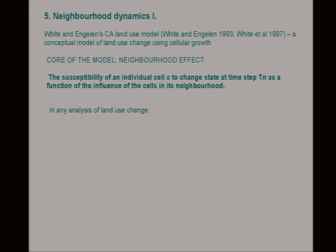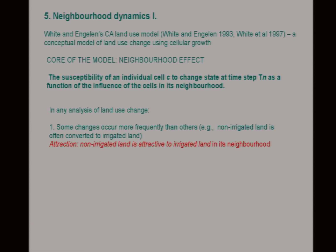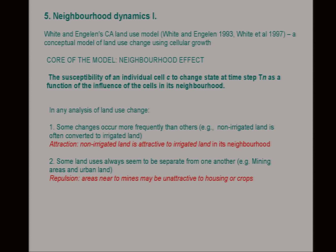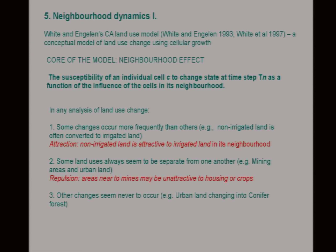So just to talk about the neighbourhood dynamics. At the core of this model by White and Engelen, we have the idea that there's the susceptibility of an individual cell C to change state at time TN as a function of the influence of the cells in its neighbourhood. When you do a land use change analysis, you see some changes that frequently repeat themselves. You don't get irrigated land that just turns up out of nowhere — normally it's farmland that was not under irrigation. That's attraction, represented in our model as attraction in the cell neighbourhood. Some land uses are always separate — generally you find mining areas separate from urban land. That's repulsion. And then you have some changes that never happen, like urban land changing into conifer forest. This is an example of persistence — urban land is a good example of something that nearly always stays where it is.